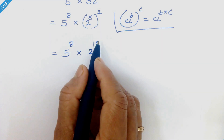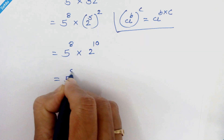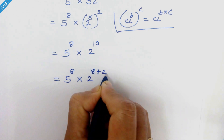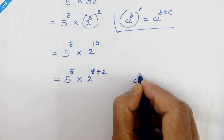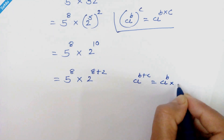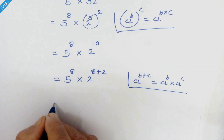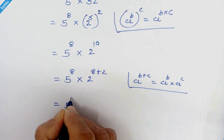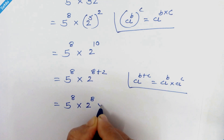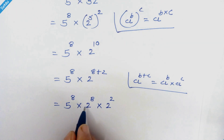Now this 10 can be written as 8 plus 2. So here we have 5 raised to 8 times 2 raised to 8 plus 2. If we have a raised to b plus c, then it can be written as a raised to b times a raised to c. We will apply this rule here. So we have 5 raised to 8 times 2 raised to 8 times 2 square. Now these 2 have the same exponent.